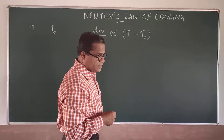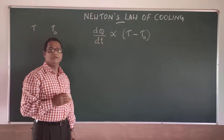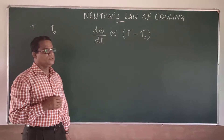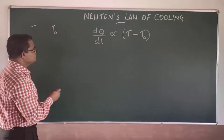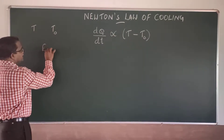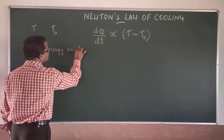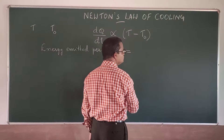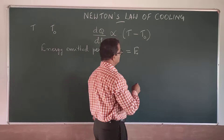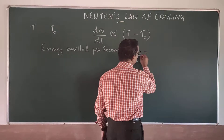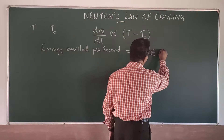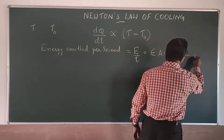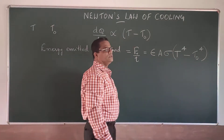According to blackbody emission and Kirchhoff's law, the energy emitted per second is given by: E/T = ε × A × σ × (T⁴ - T₀⁴). Here T is the temperature of the body and T₀ is the temperature of the surroundings.